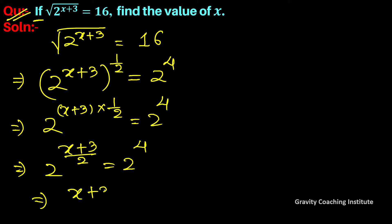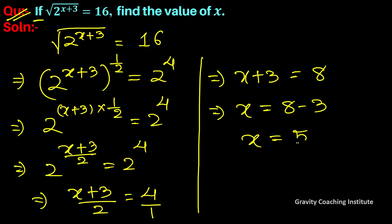So the powers must be equal: (x+3)/2 = 4. Cross multiplying gives x+3 = 8, which implies x = 8-3, so x = 5.